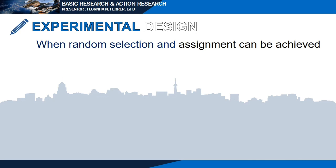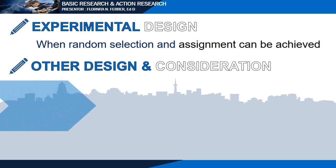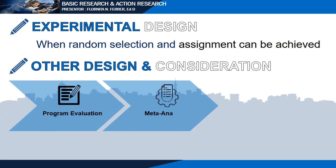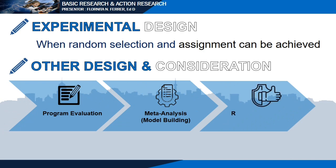Or you may use the experimental design, most appropriate when random selection and assignment can be achieved because this design adheres to scientific research. It speaks to how participants are allocated to different groups in an experiment. There are still other designs and considerations you might use. One is program evaluation — a research method for collecting, analyzing, and using information to answer questions about projects, policies, and programs, particularly about their effectiveness and efficiency. This can involve both qualitative and quantitative methods.